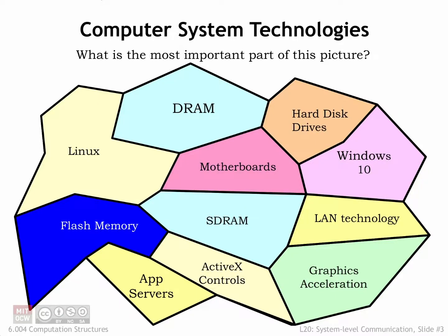Computer systems bring together many technologies and harness them to provide fast execution of programs. Some of these technologies are relatively new, others have been with us for decades. Each of the system components comes with a detailed specification of their functionality and interface. The expectation is that system designers can engineer the system based on the component specifications without having to know the details of the implementations of each component.